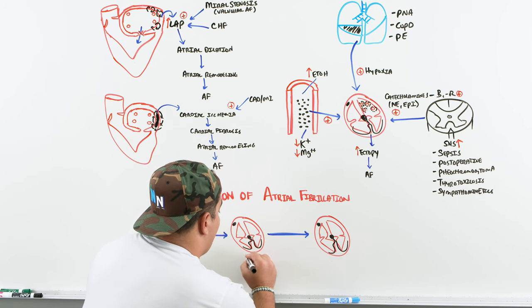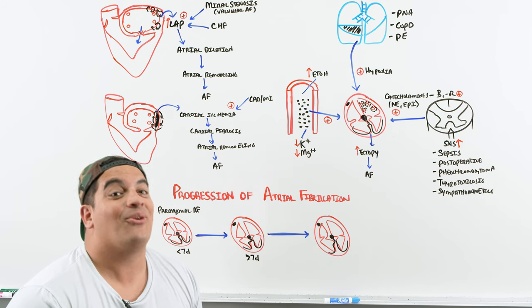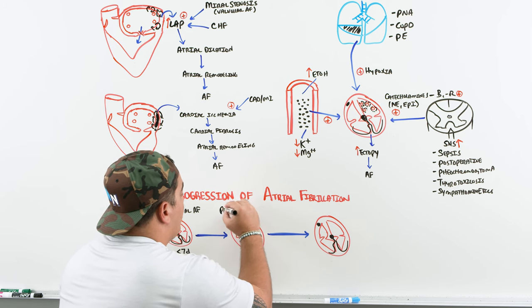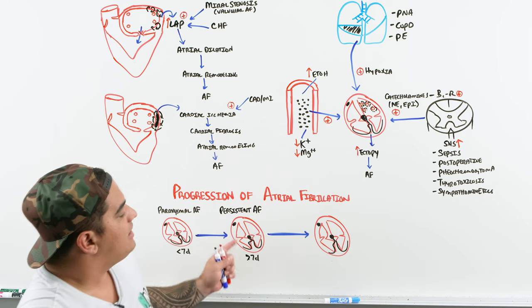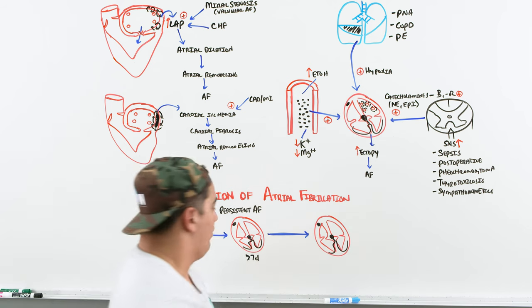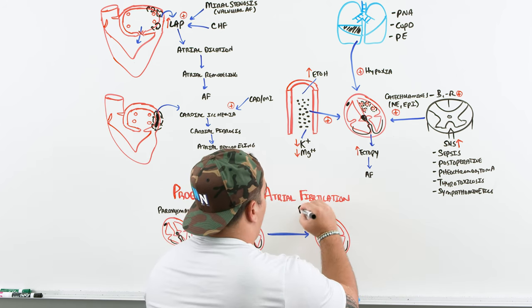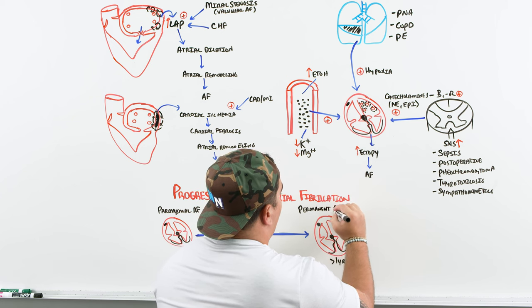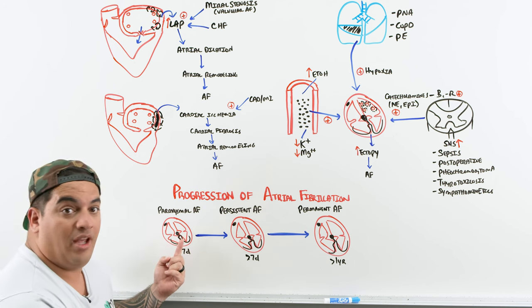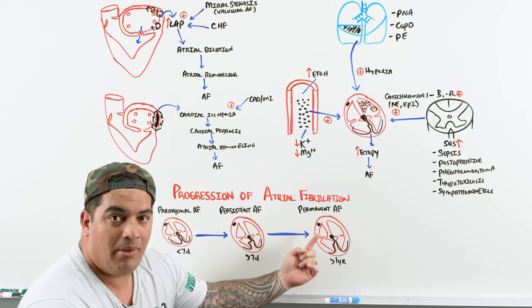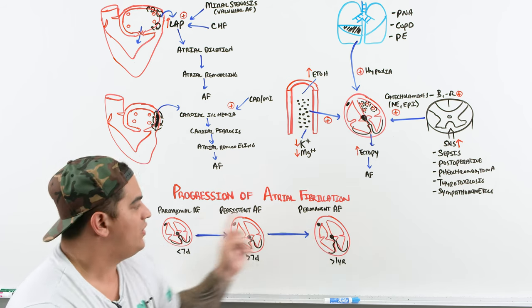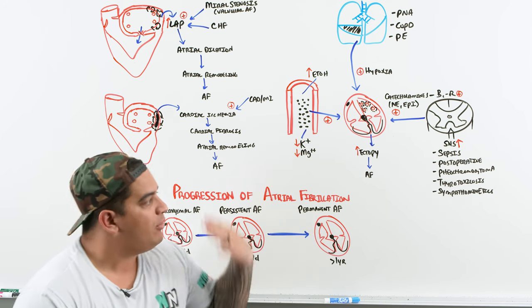If AFib goes greater than seven days, the heart is really starting to remodel, making it harder to return to sinus rhythm — though it's still possible. This is called persistent AFib. If a patient has been in AFib for more than seven days up to at least one year, we call this permanent AFib. Patients in permanent AFib are locked into new remodeling and altered circuitry, making it essentially impossible to restore native rhythm.